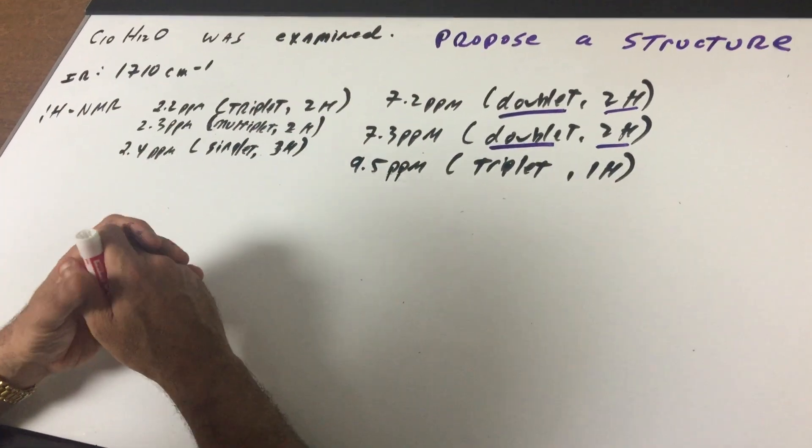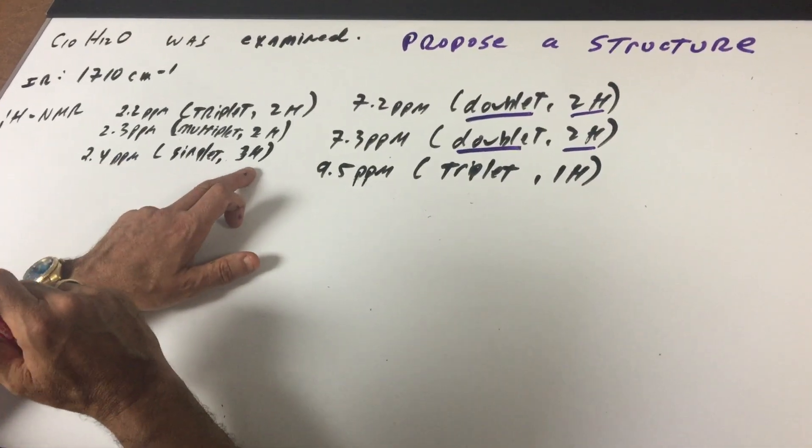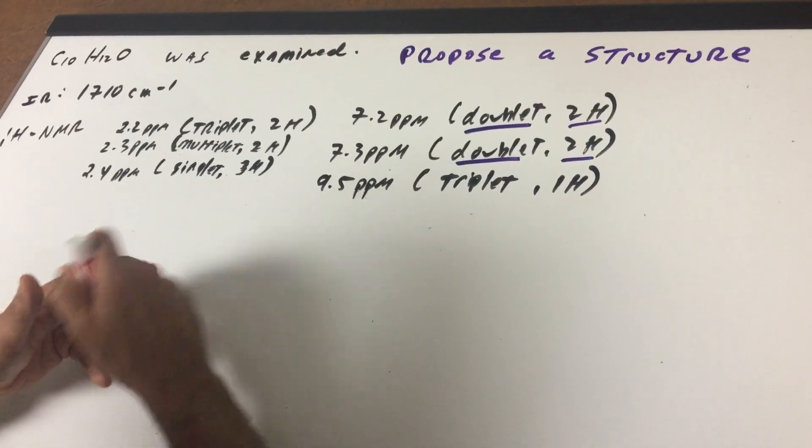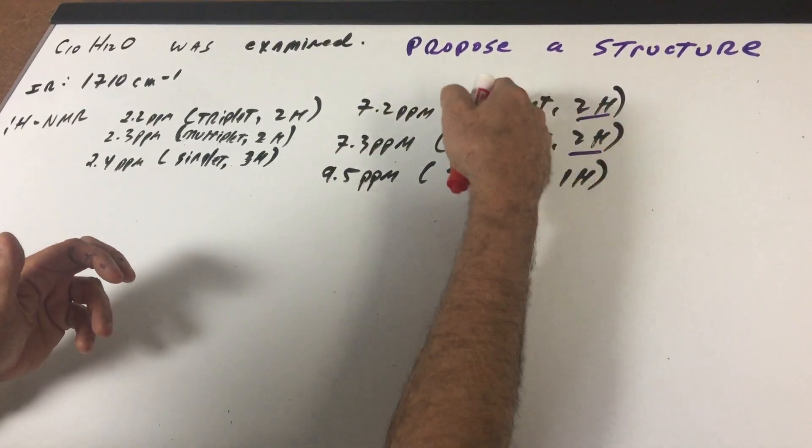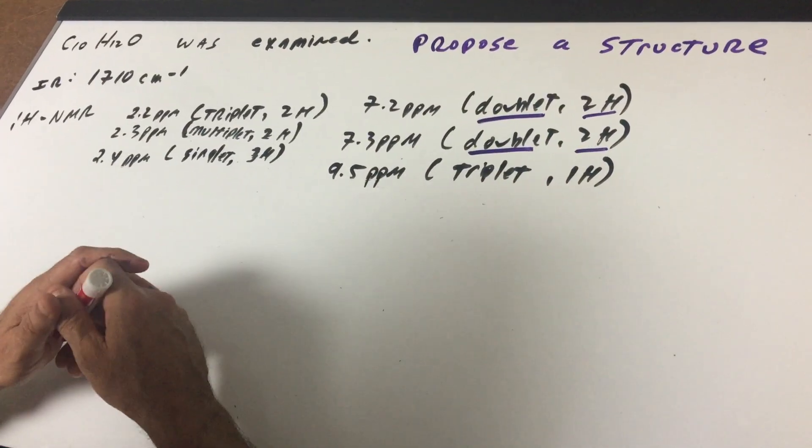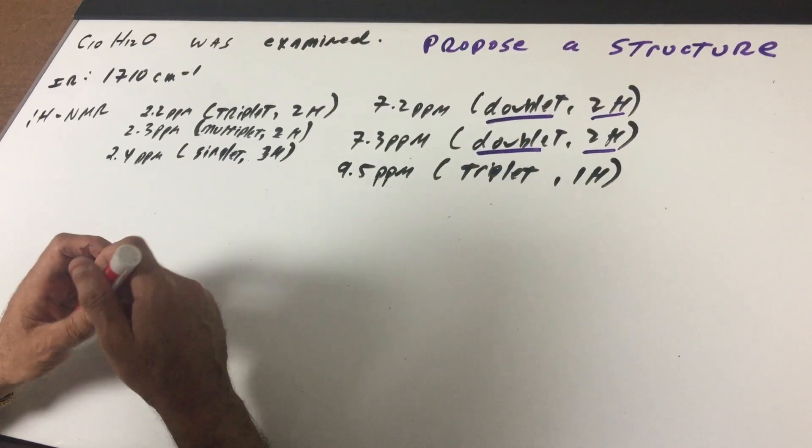Notice at 2.3 there's a multiplet, two H's again. There's a singlet, three H's give a singlet at 2.4 but they're really close together, and then I give you two doublets at around seven-ish at 7.2 and 7.3, and then there's a triplet at 9.5 ppm.